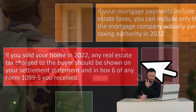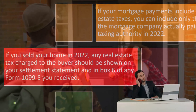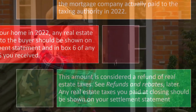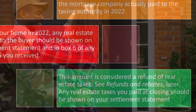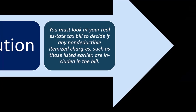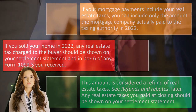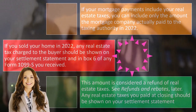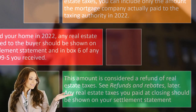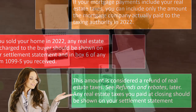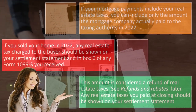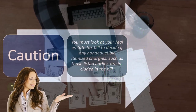If you sold your home in 2022, any real estate tax charged to the buyer should be shown on your settlement statement and in box 6 of any Form 1099-S you received. This amount is considered a refund of real estate taxes. Any real estate taxes you paid at closing should also be shown on your settlement statement. When a home is purchased, there's an issue of who handles the property taxes in the agreement — it can be a little messy, and you may need to look through the closing statement to determine the proper allocation of payments and who gets a deduction based on the closing agreement.